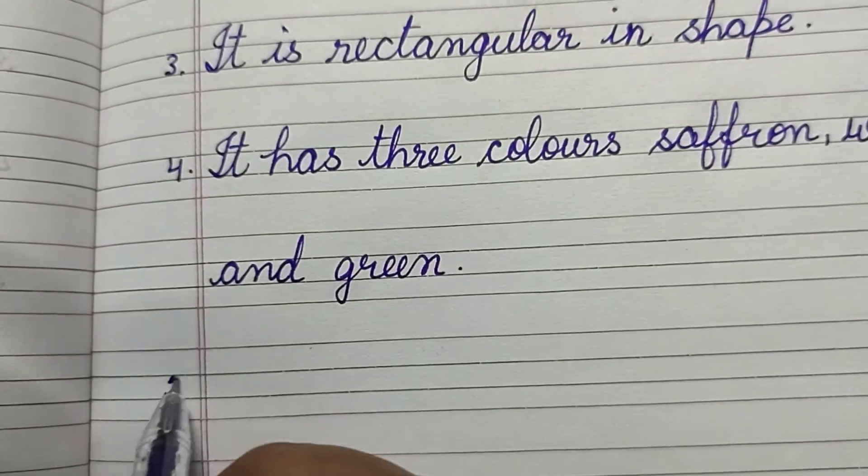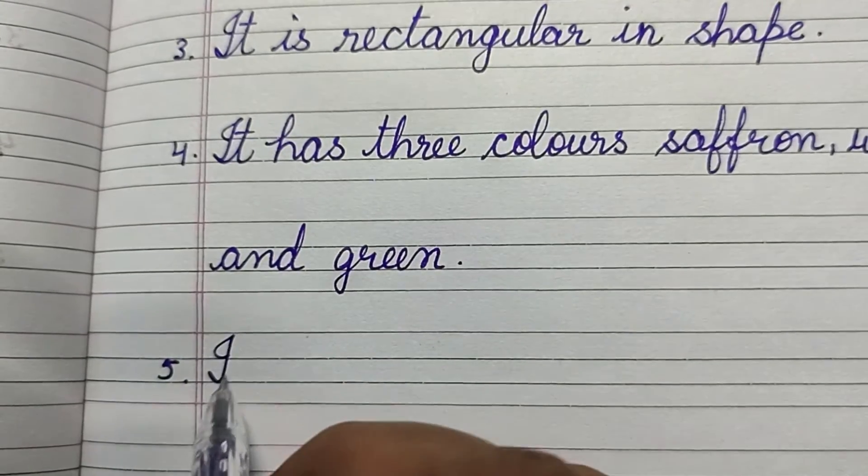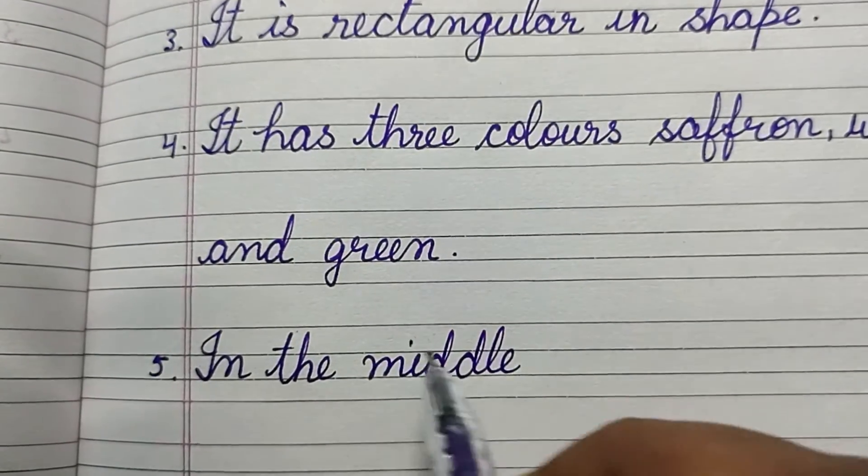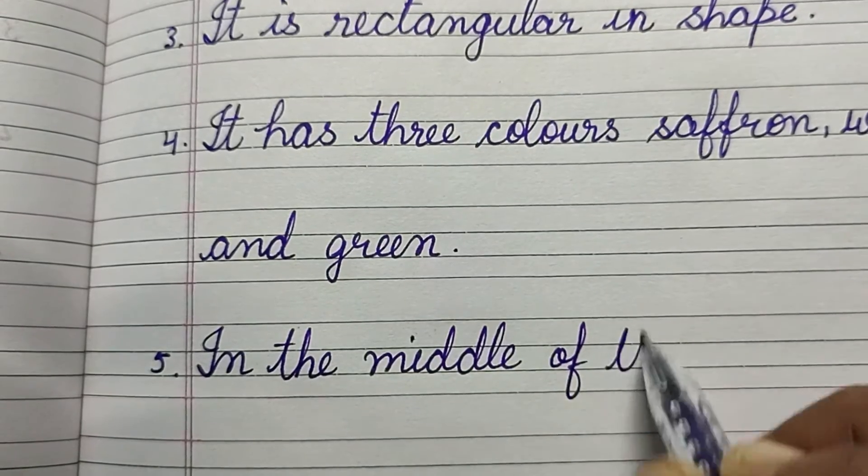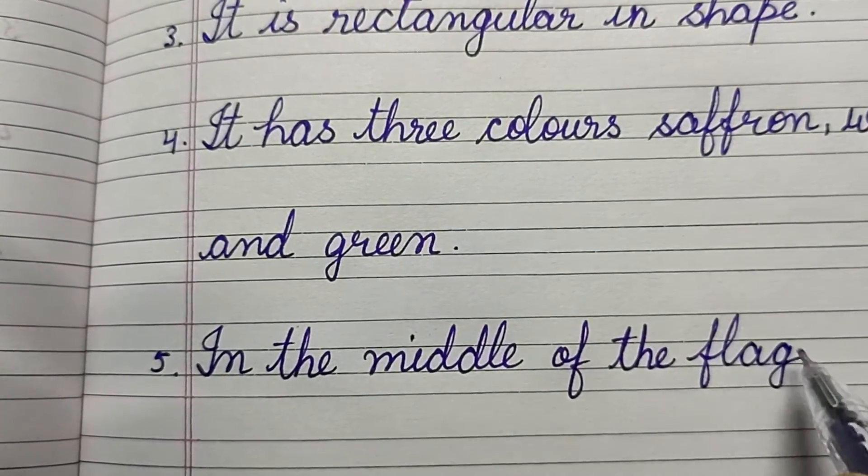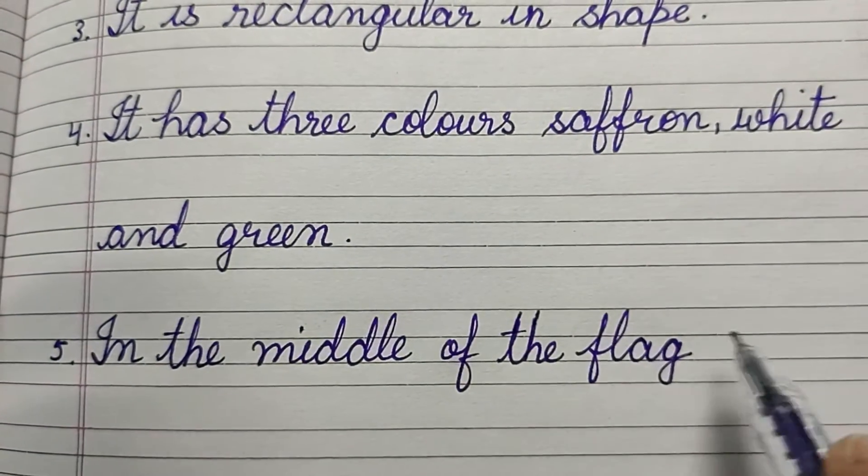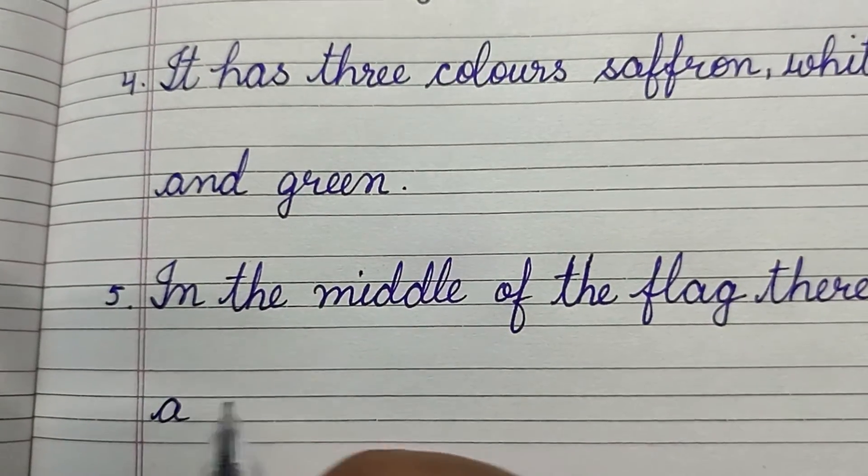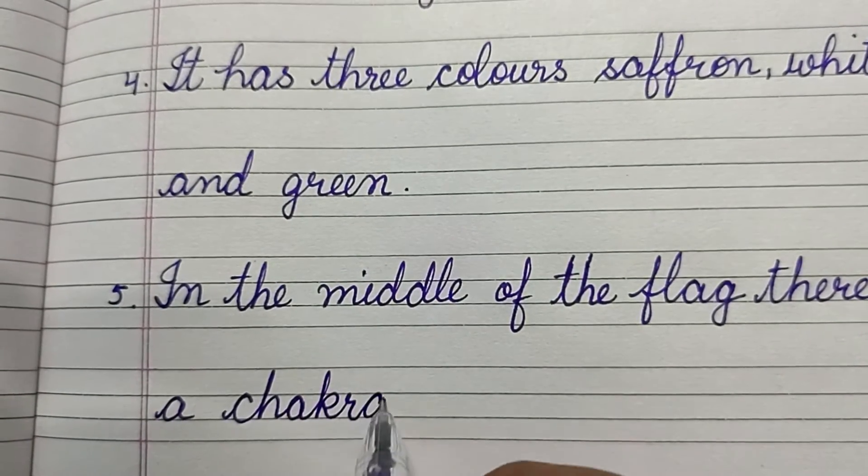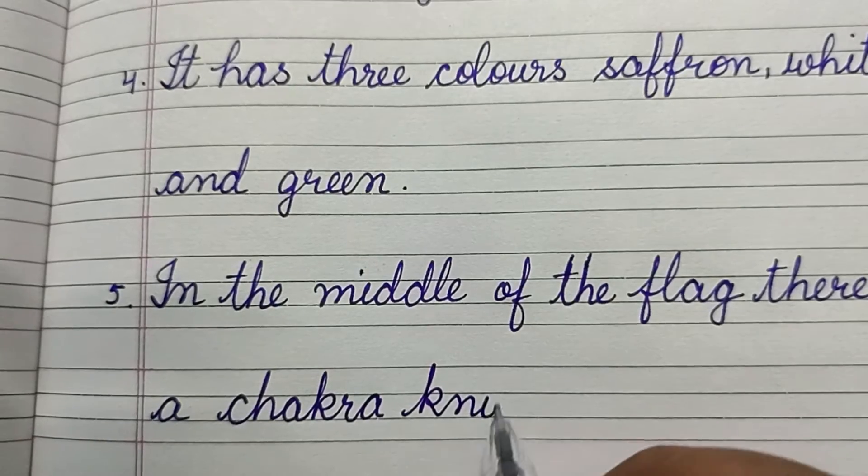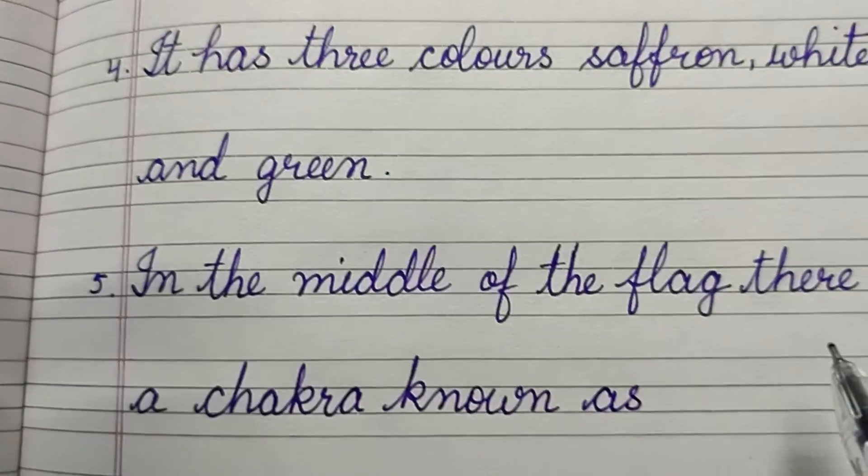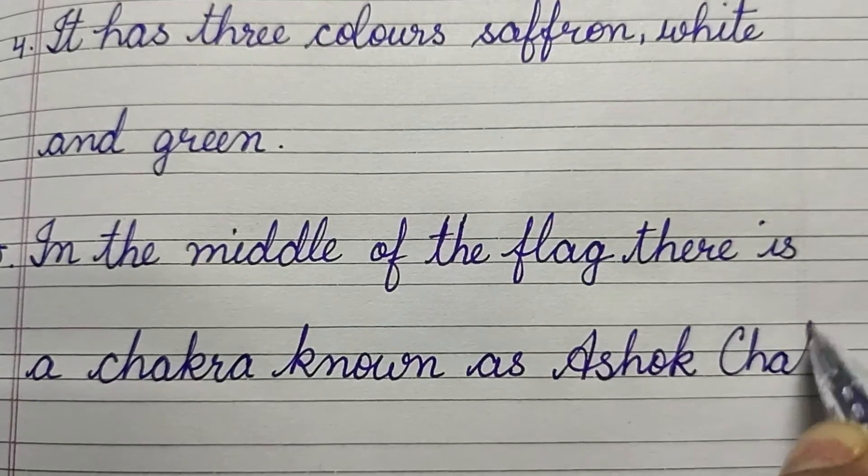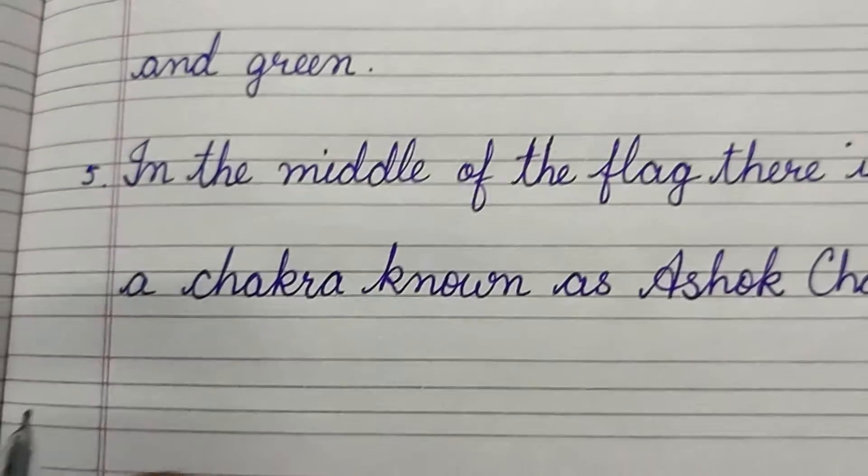Line number five: In the middle of the flag there is a chakra known as Ashok Chakra.